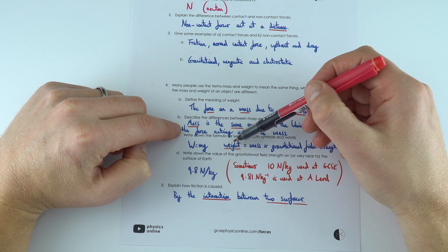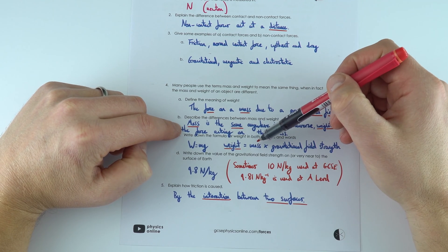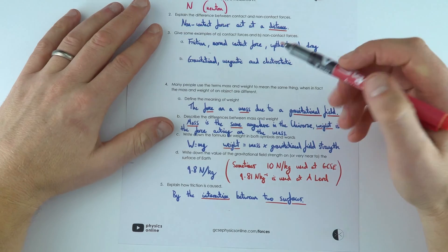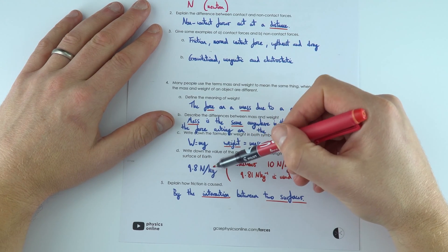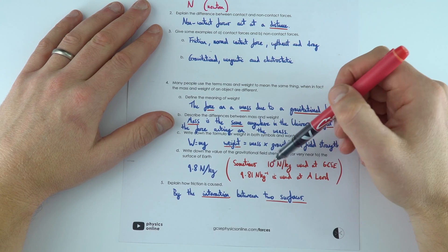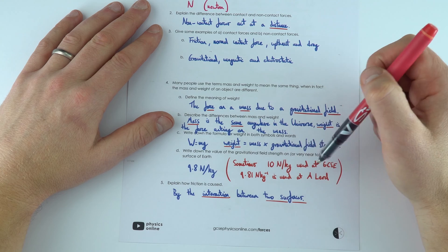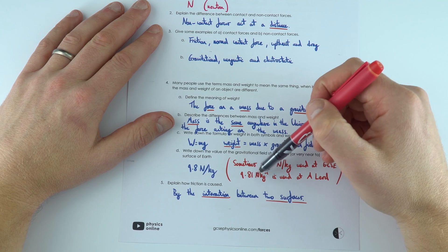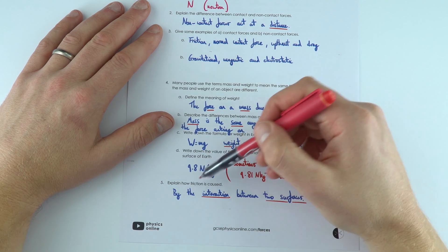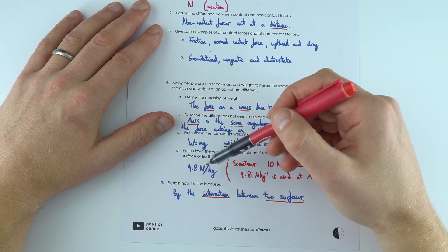Weight in newtons is a force, mass is in kilograms. The gravitational field strength is 9.8 newtons per kilogram. Some examples might use a value of 10, and at A level we tend to use 9.81, but 9.8 is what I use for all of my calculations.